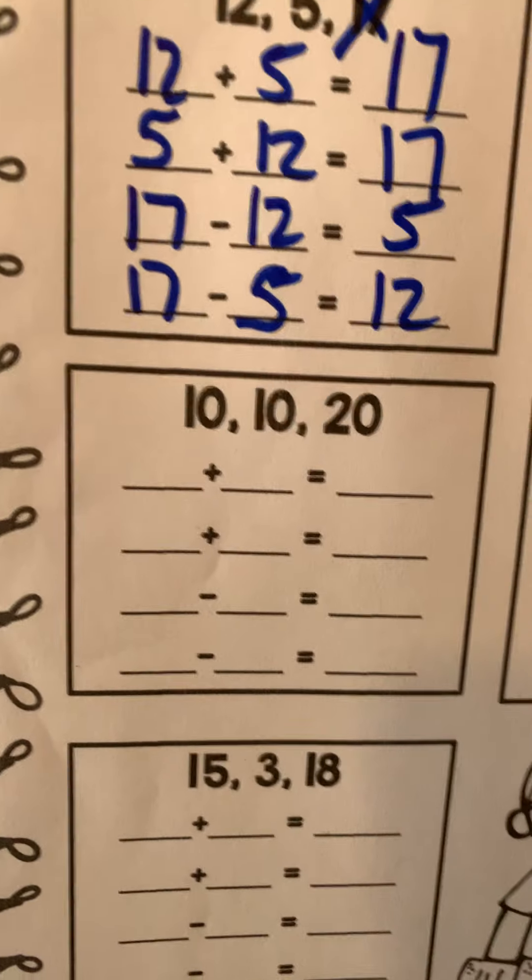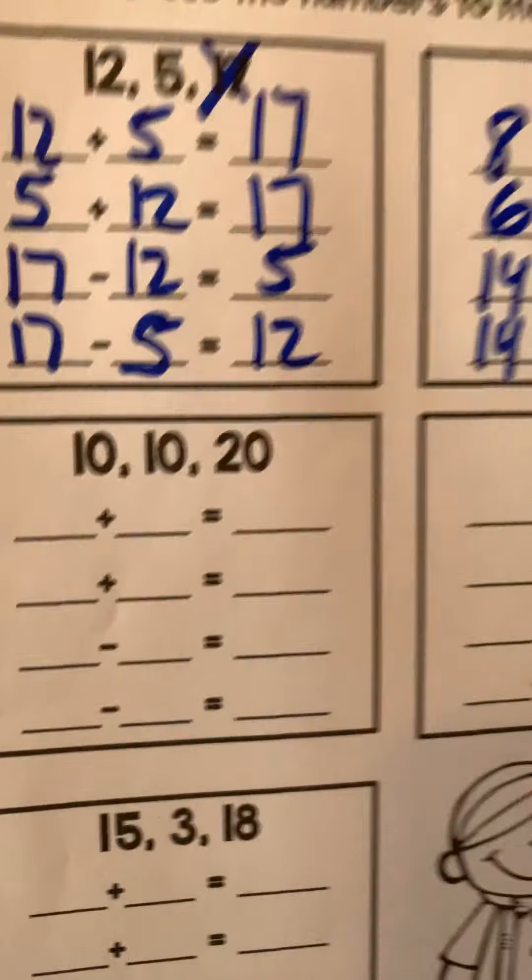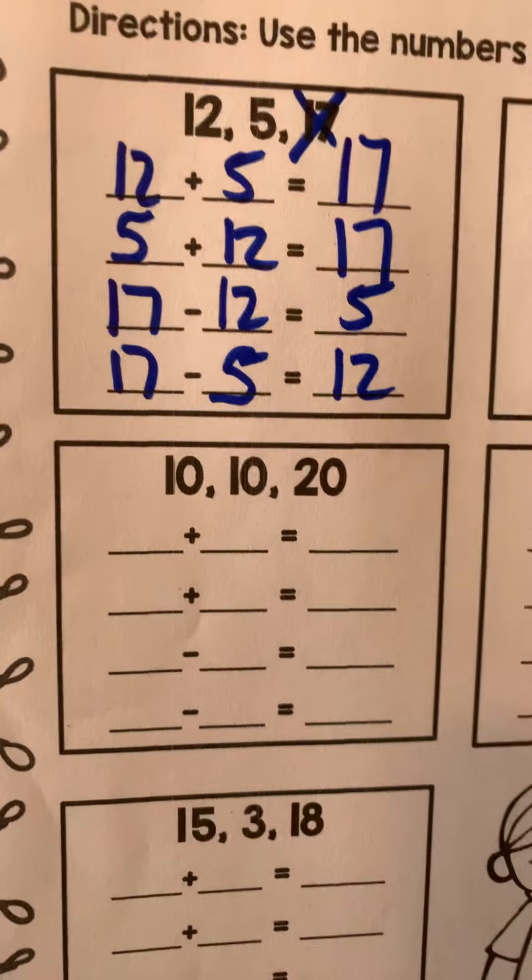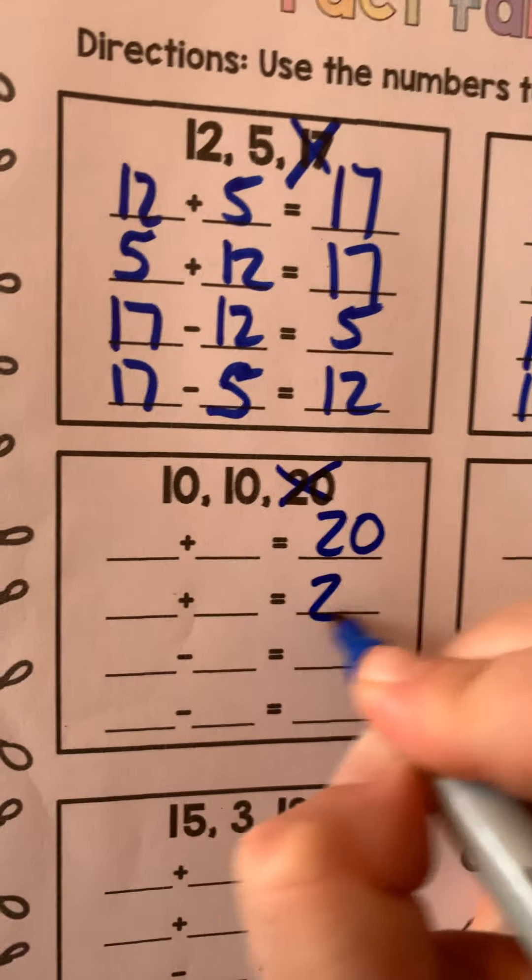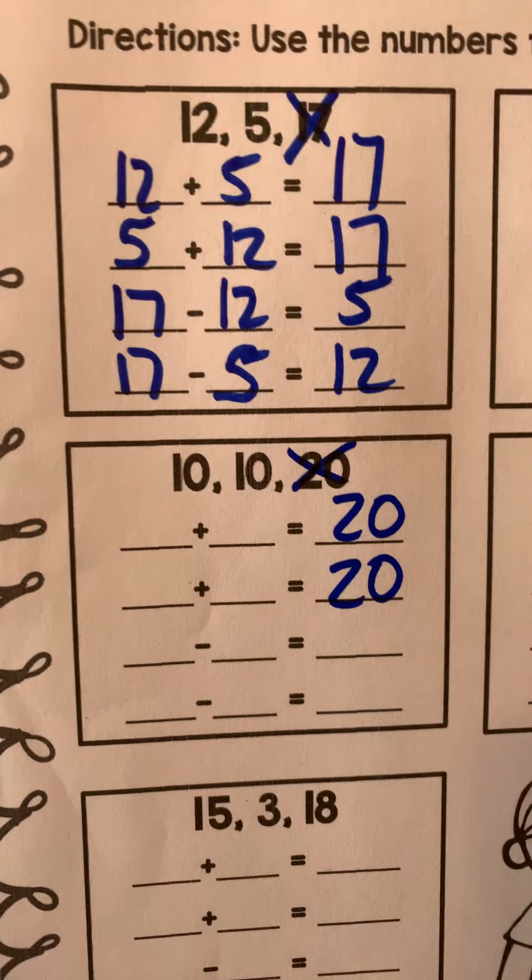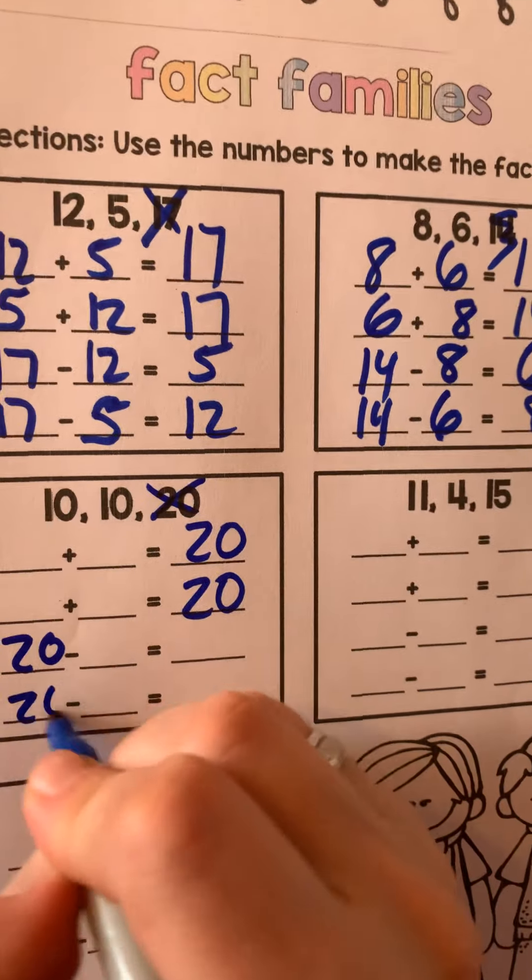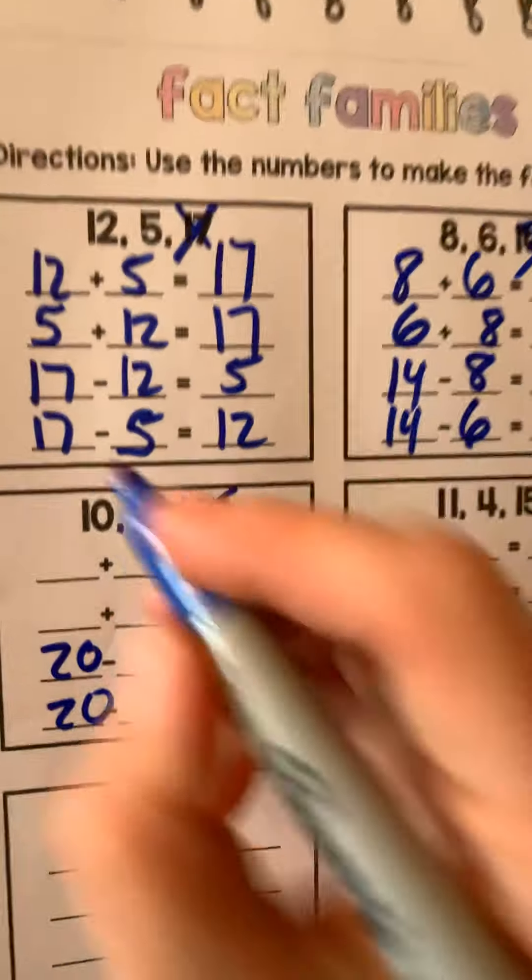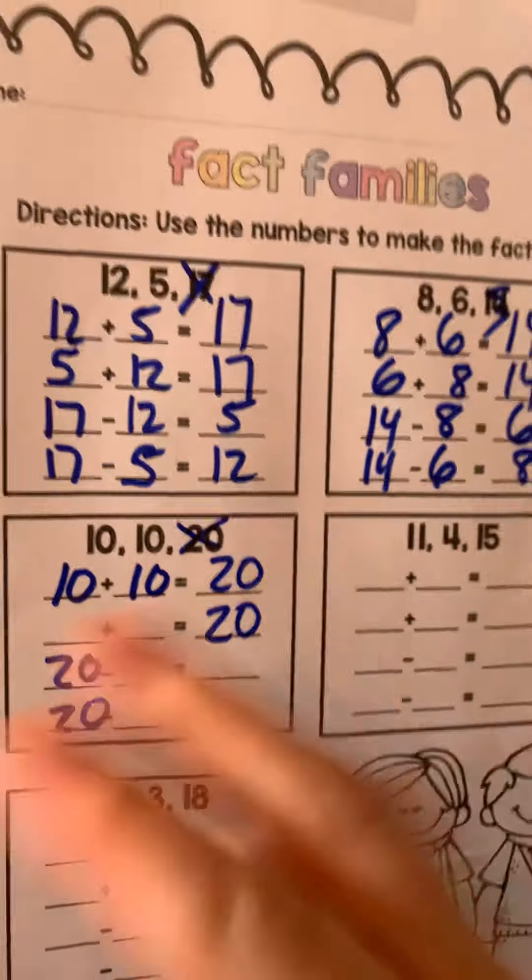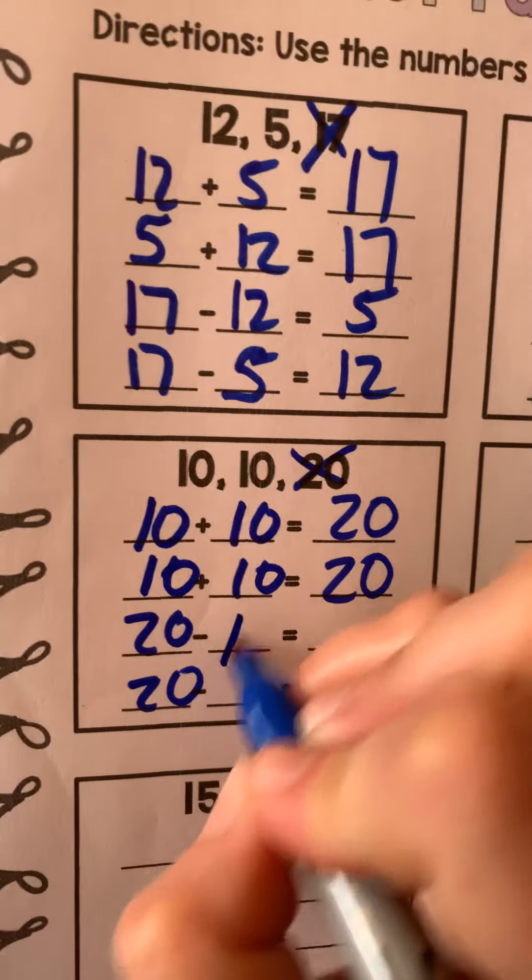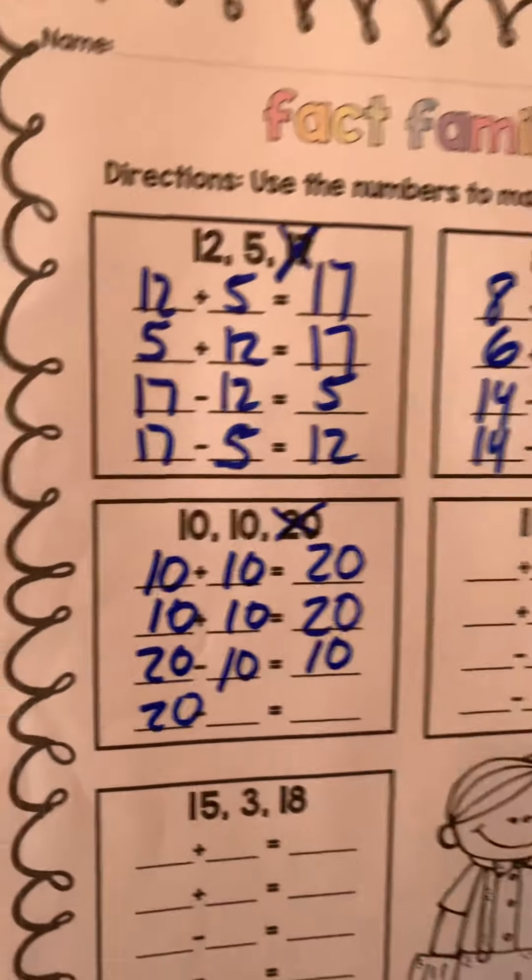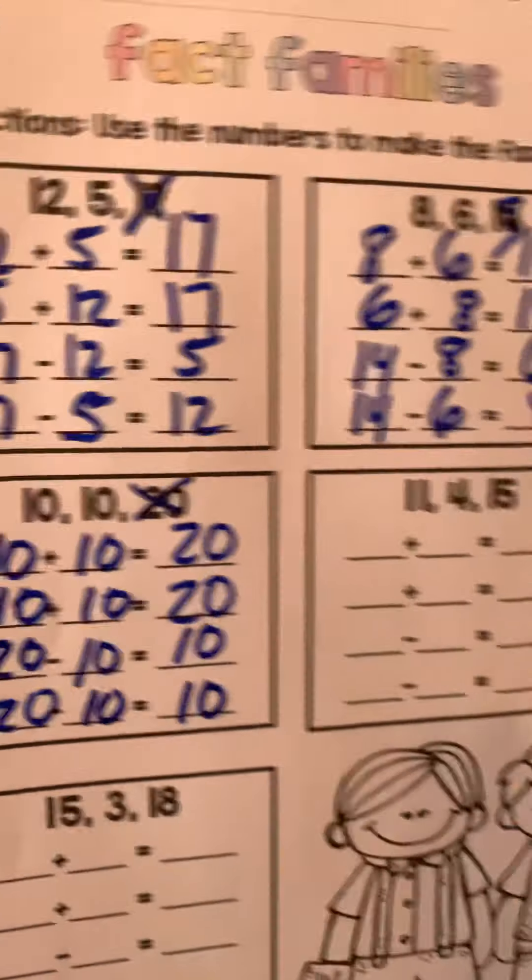Keep going. 10 plus 10 is 20. There's a doubles again. So addition ends with the biggest number, and it is what? It's 20, Alexis said. And subtraction starts with the biggest number, still 20. Now we just have to put those 10s in. Ready? 10 plus 10 is 20. Flip. 10 plus 10 is still 20. 20 minus 10 is 10. Flip. 20 minus 10 is 10.